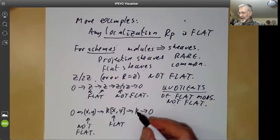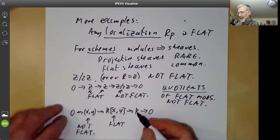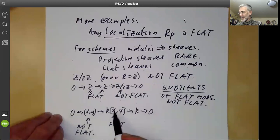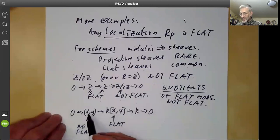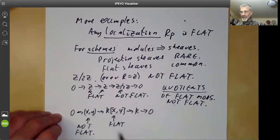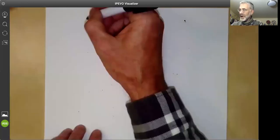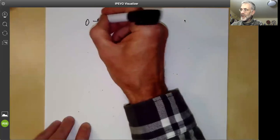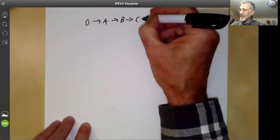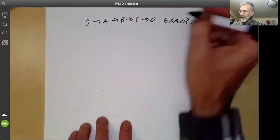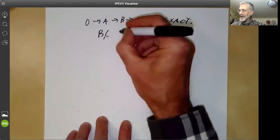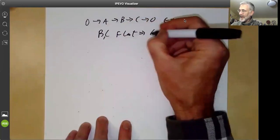Here you see this module here isn't flat. And you might ask if you've got a flat module mapping onto a flat module, is the kernel flat? And the answer is yes. In general, if we've got a sequence 0 goes to A goes to B goes to C goes to 0 which is exact, then B and C flat implies A is flat.